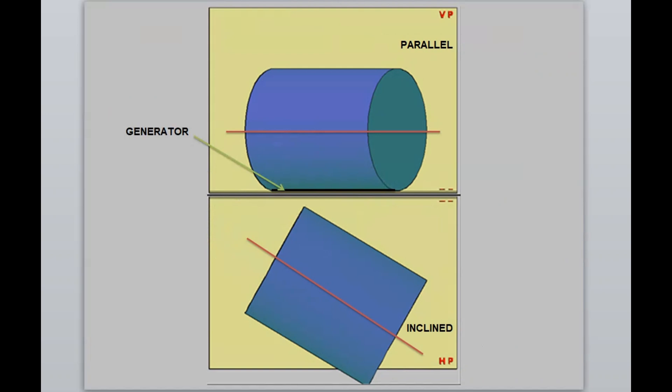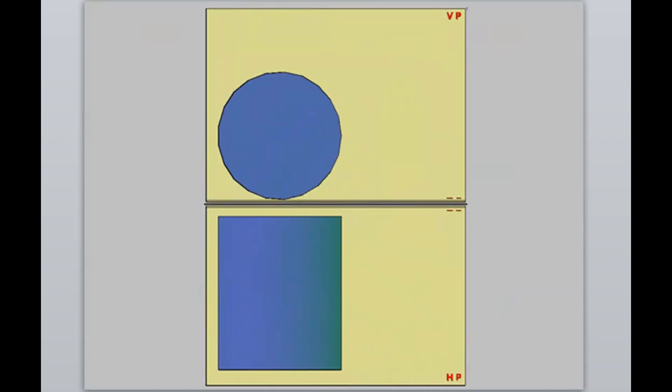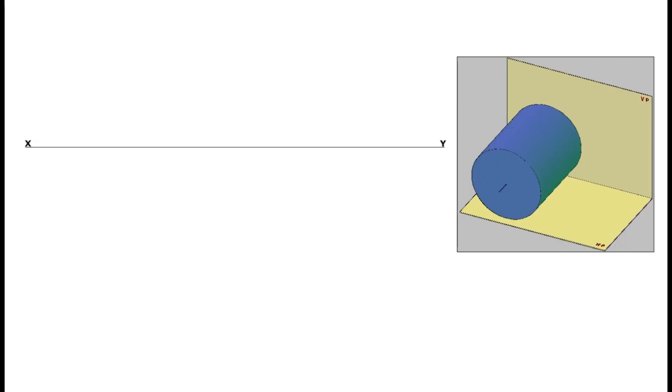Since the axis of the cylinder is inclined to VP, in the first stage, we have to consider that the axis is perpendicular to VP. When the axis is perpendicular to VP, the circle that is the base shape of the cylinder can be seen in the front view. Draw a circle of diameter 70mm above the XY line as the elevation of the first stage.